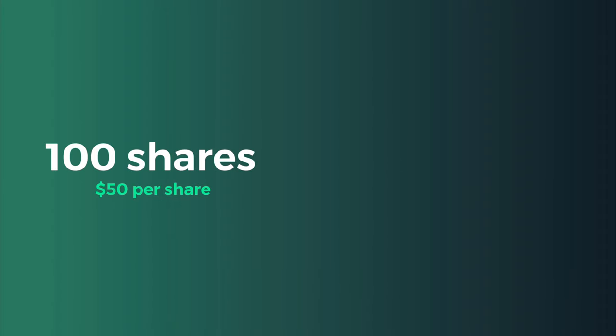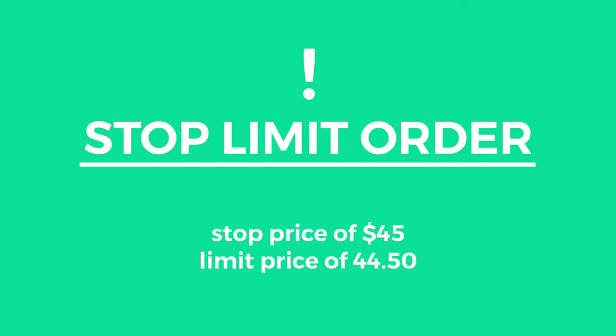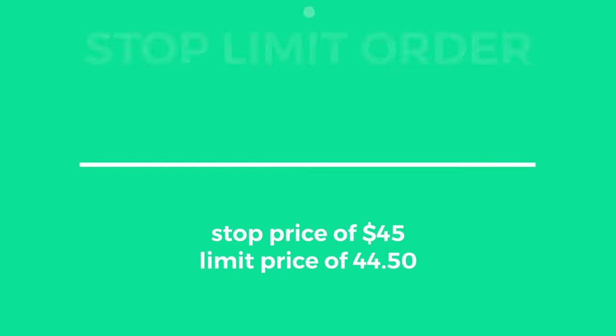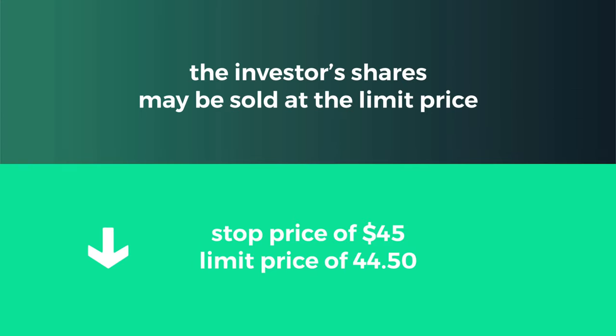Suppose an investor buys 100 shares of XYZ at $50 per share and they want to limit their losses to no more than $5 per share. In this case, they can place a stop limit order with a stop price of $45 and a limit price of $44.50. If the stock price falls below $45, the order will be triggered and the investor's shares may be sold at the limit price.